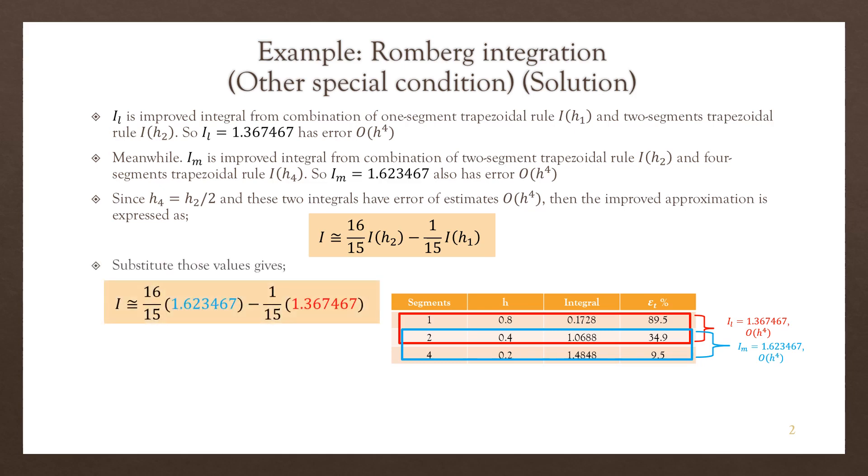Then we substitute those values. We will have I equal to 1.640533 with the error of O(h⁶). Let's check the true error: zero. And the percentage true error is zero percent.